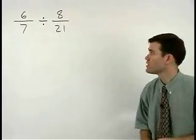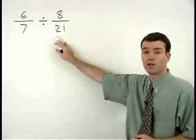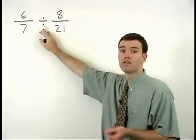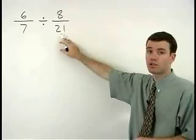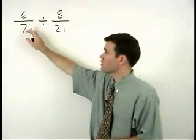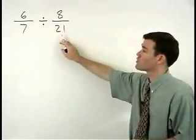Remember that when dividing by a fraction, we can change the division sign to multiplication and flip the second fraction. So 6 over 7 divided by 8 over 21 means the same thing as 6 over 7 times 21 over 8.